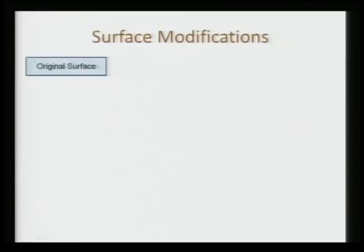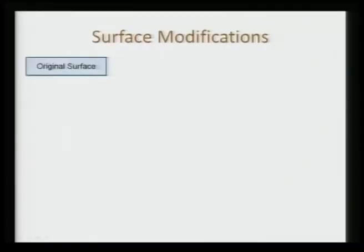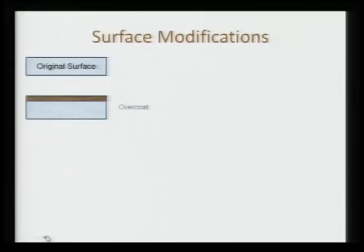If we have an original surface that is prone to corrosion, wear, and cytocompatibility issues — it can release certain ions — and we want to impart certain functionality such as blood compatibility, we need to modify the surface accordingly. In the first case, we can just over-coat the material. We apply some material on the original surface to protect the underlying surface and impart certain functionality.